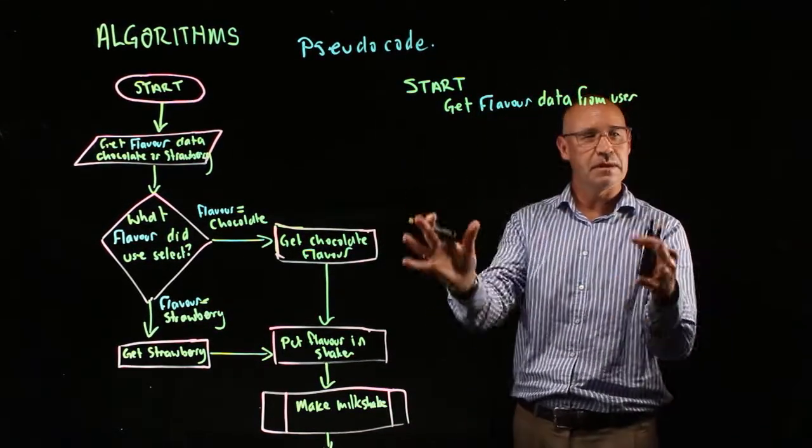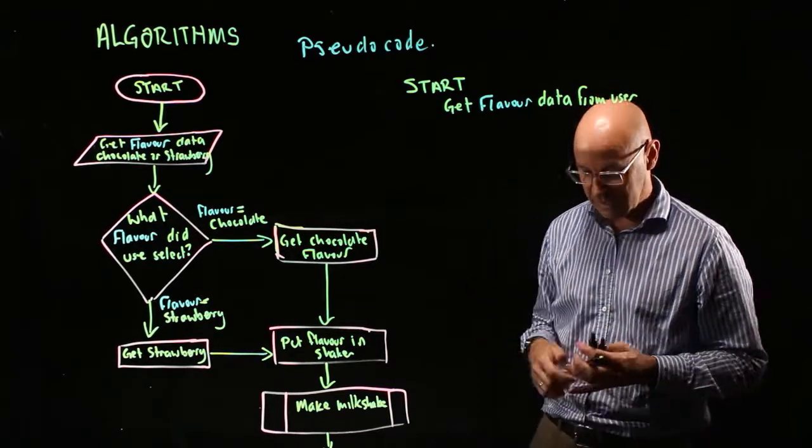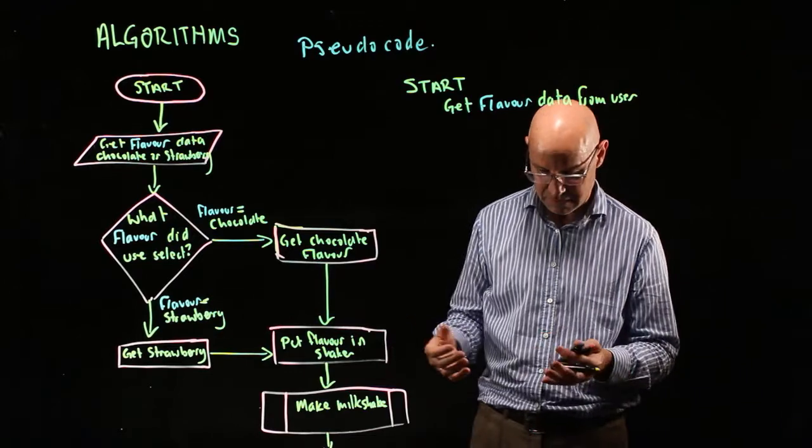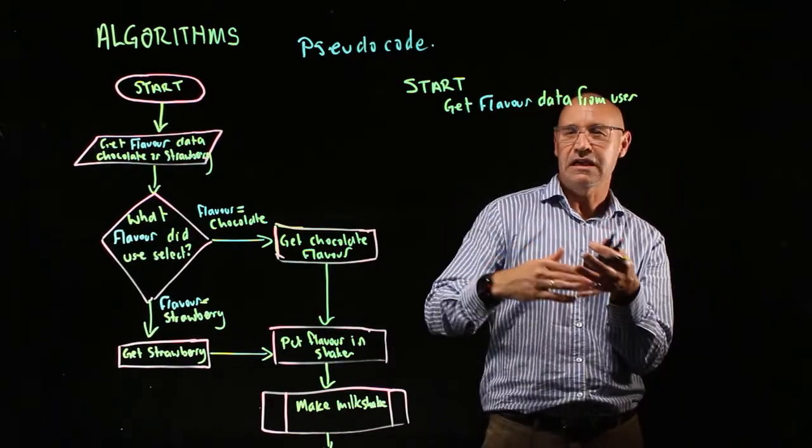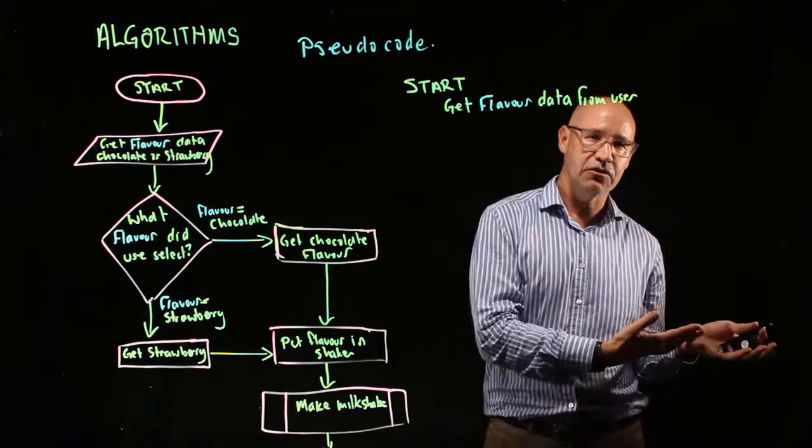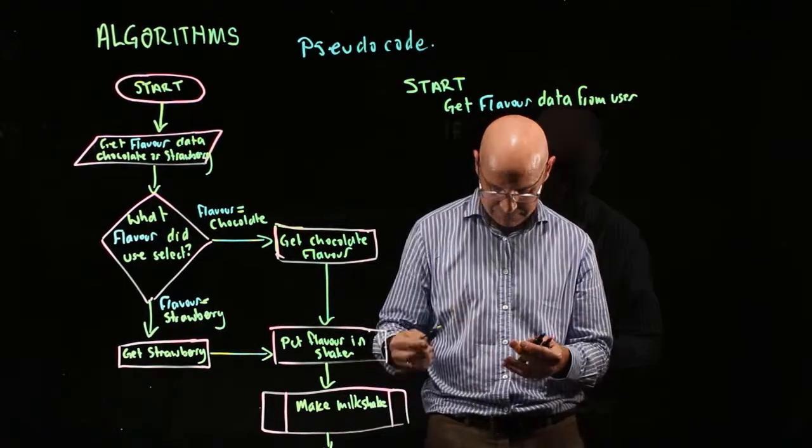Okay, so next step is to get the flavor data from the user. All right, so we're going to end up with a choice here, aren't we? So if the flavor is chocolate we're going to do this, if the flavor is strawberry I'm going to do this. So we need to start with an if statement.